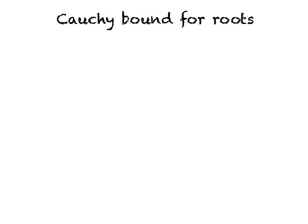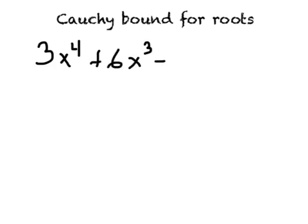So let's take an example here. Let's look at this polynomial: 3x to the fourth plus 6x cubed minus 2x squared plus 1.